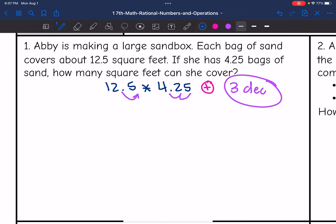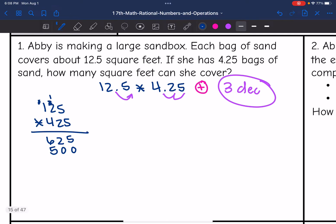Now I'm going to multiply these like they're whole numbers. We're going to do 125 times 425. So 5 times 5 is 25, 5 times 2 is 10 plus 2 is 12, 5 times 1 is 5 plus 1 is 6. Now we're going to do the 2. 2 times 5 is 10, 2 times 2 is 4 plus 1 is 5, and 2 times 1 is 2. Now we are going to multiply the 4. So 4 times 5 is 20, 4 times 2 is 8 plus 2 is 10, and 4 times 1 is 4 plus 1 is 5.